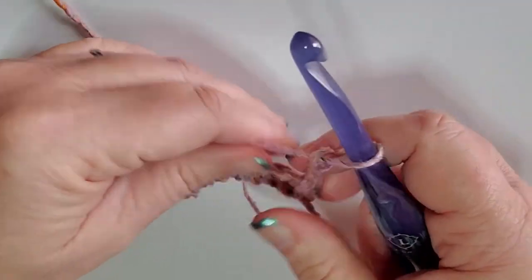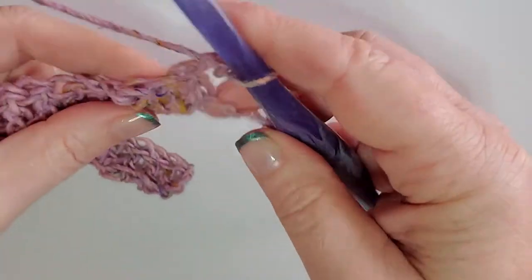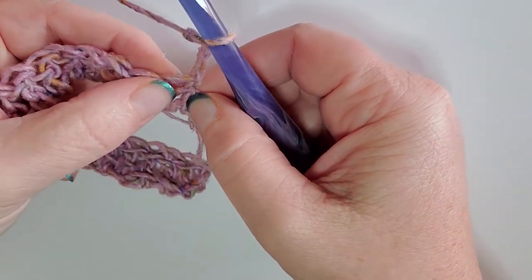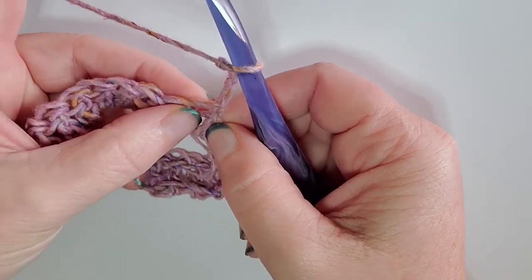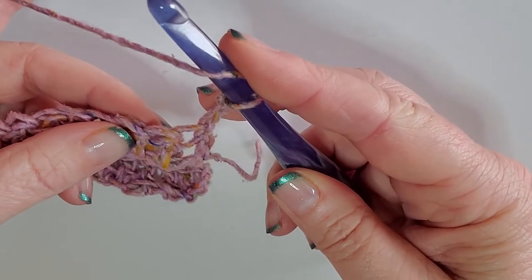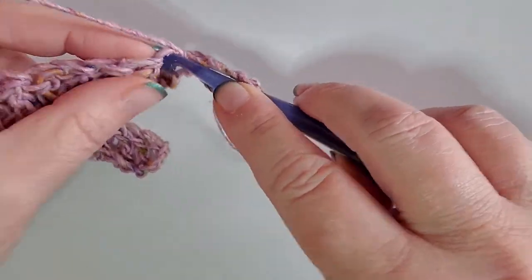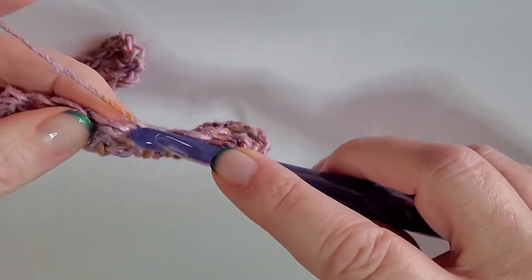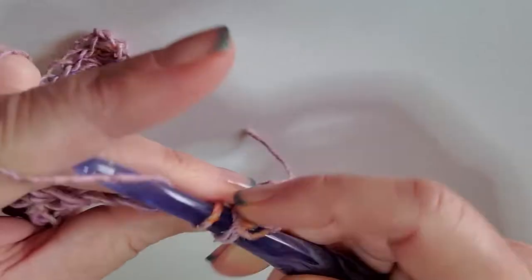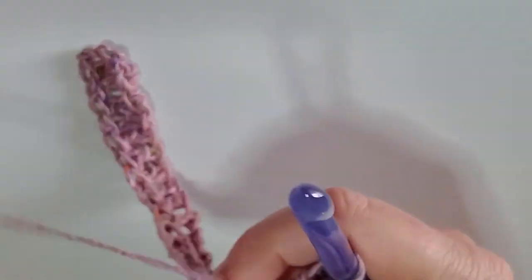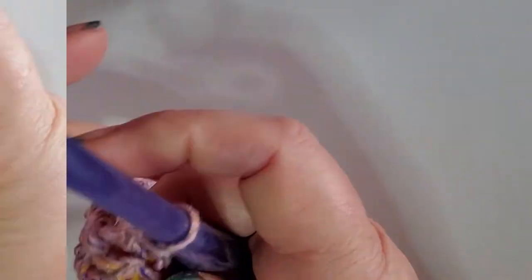We chain three and then turn our work. Then now we are going to do the pattern for this. This counts as a stitch, so when we put our first stitch in, we are not going into that first stitch because our three chains on the end counts as that. So we're going to go into the next stitch, do a double crochet, and in the next a double crochet.